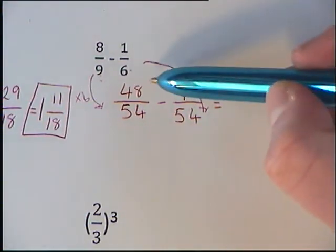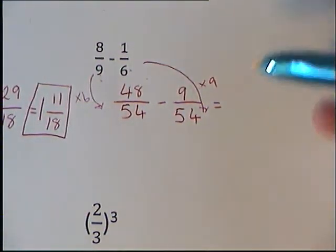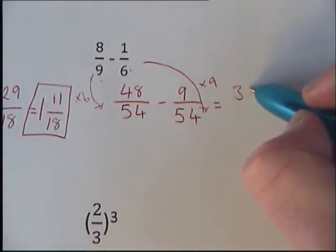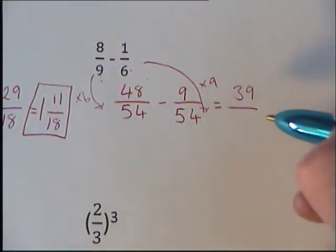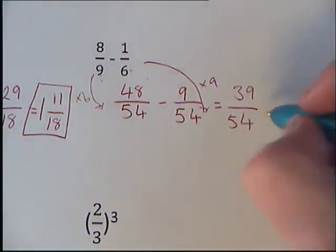Take those away, so 48 minus 9 gives us 39, all over 54.